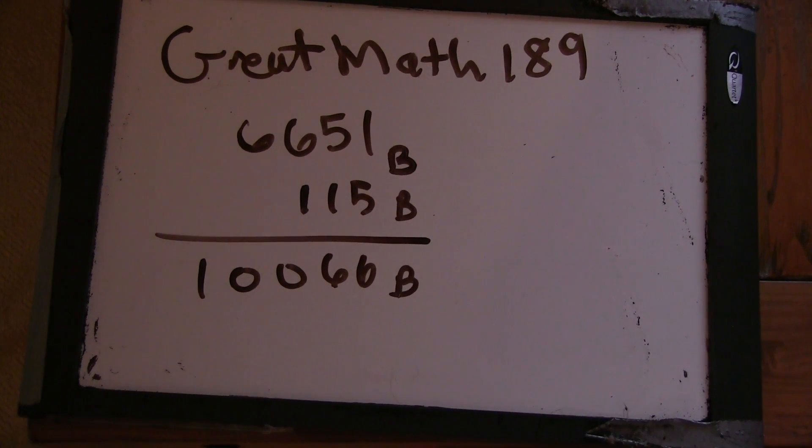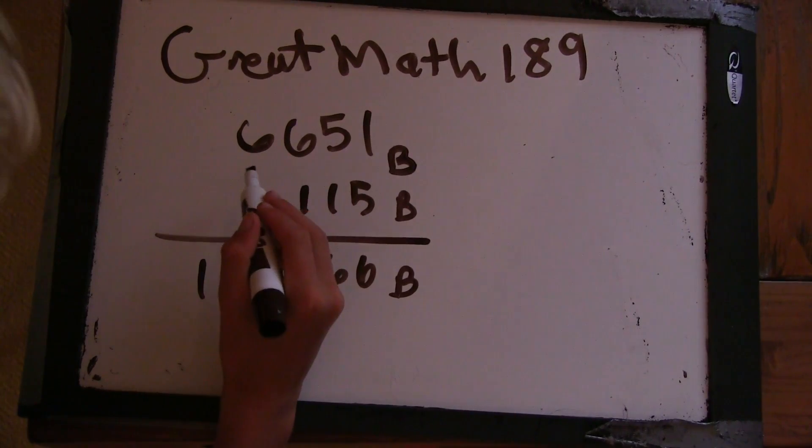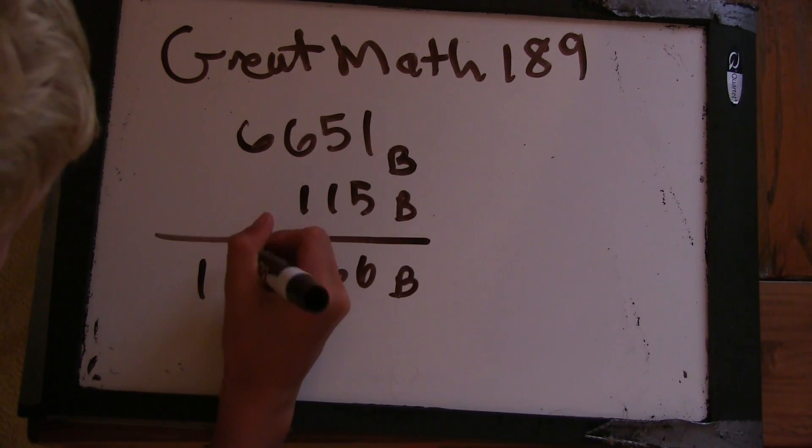Well, that could be in base 7. Okay. Because 6 plus 1—because 6 plus 1, if that was 7 here, then it would go to 1, 1, 0. And then, the 6 here, 6 plus 1,